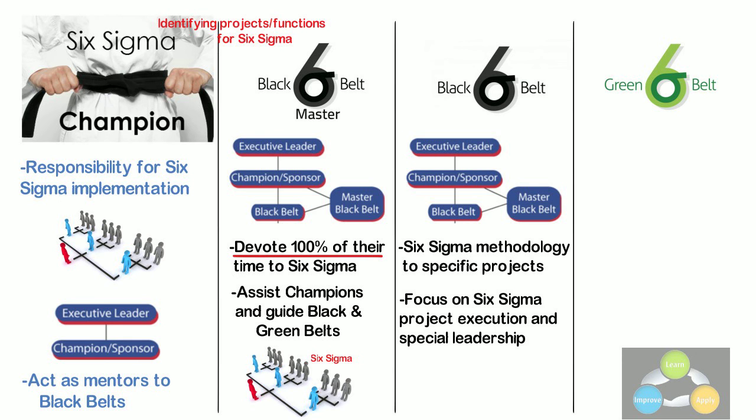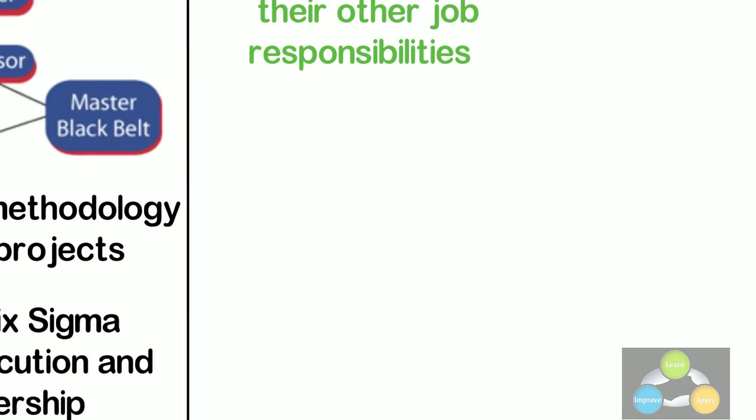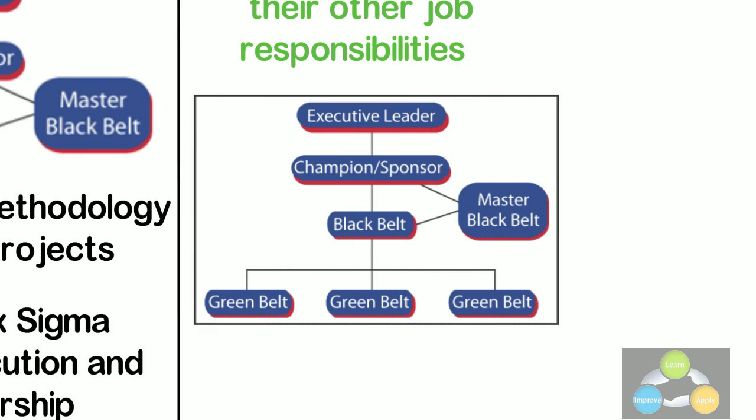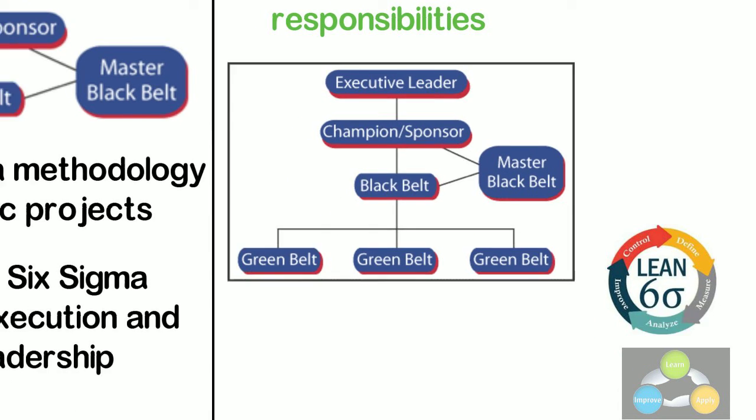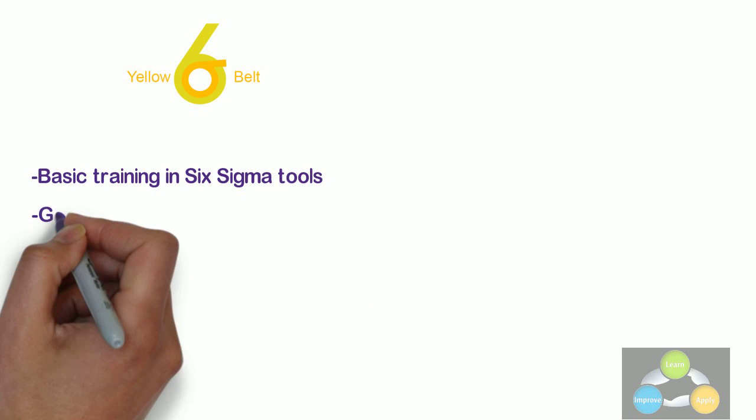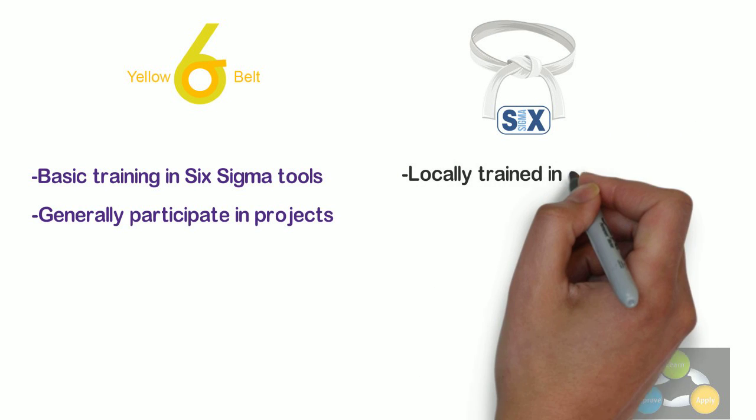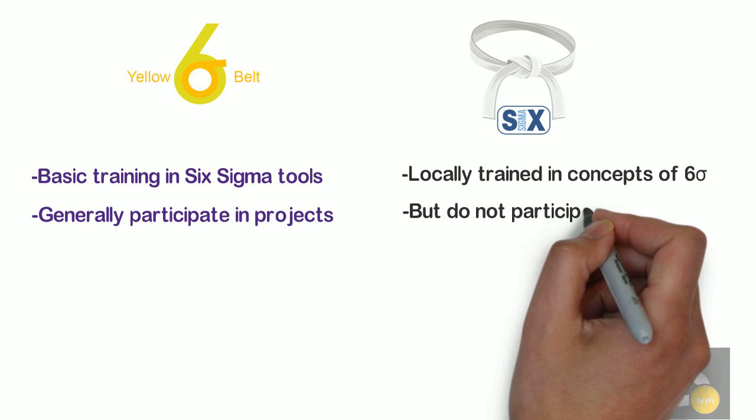Green Belts are the employees who take up the Six Sigma implementation along with their other job responsibilities, operating under the guidance of Black Belts. According to the provenance of the system, special training is needed for all of these practitioners to ensure that they follow the methodology and use the data-driven approach correctly. Some organizations use additional belt colors, such as yellow belts for employees that have basic training in the Six Sigma tools and generally participate in the projects, and white belts for those locally trained in the concepts but do not participate in the project team.